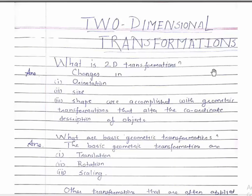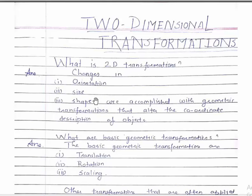What is going on guys, we will be learning about two-dimensional transformations. What is 2D transformation? Basically, changes in the orientation, size, and shape are accomplished with geometric transformations under the coordinate descriptions of an object. Suppose we have a line — we change the length or orientation of the line. Or suppose we have a 2D object like a triangle; we change the shape or angles of the triangle. That is basically what we do in 2D transformations.